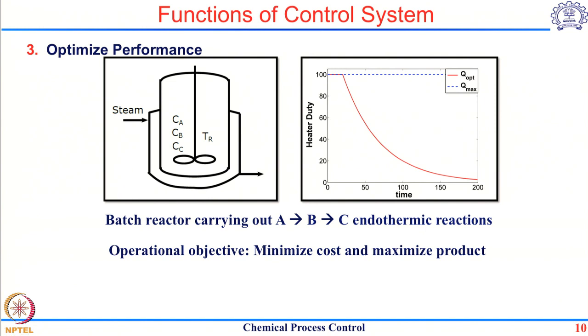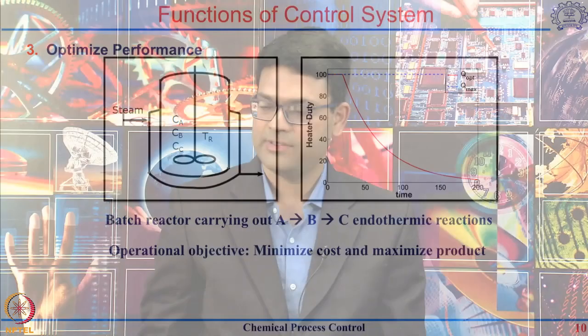Those top layers will be the layers which perform the particular objective of minimizing the cost of energy or maximizing the product. So this is the third function which a control system can perform when it is installed into a chemical system.